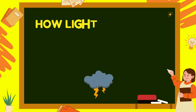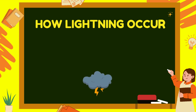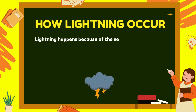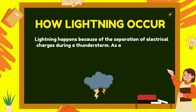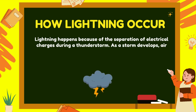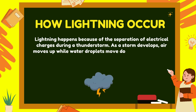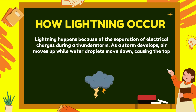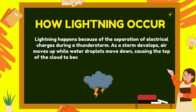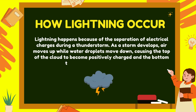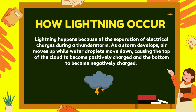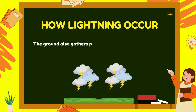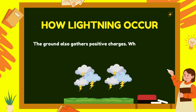How does lightning occur? Lightning happens because of the separation of electrical charges during a thunderstorm. As a storm develops, air moves up while water droplets move down, causing the top of the cloud to become positively charged and the bottom to become negatively charged. The ground also gathers positive charges.